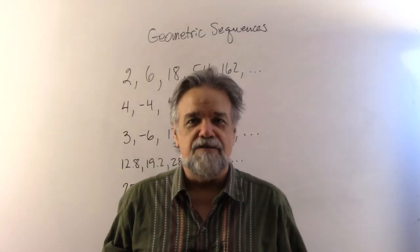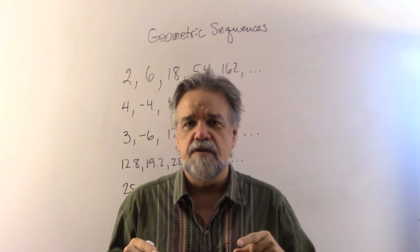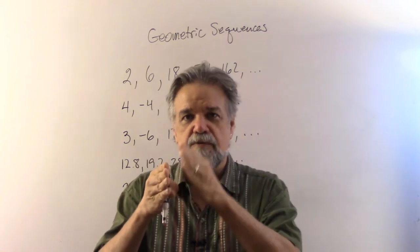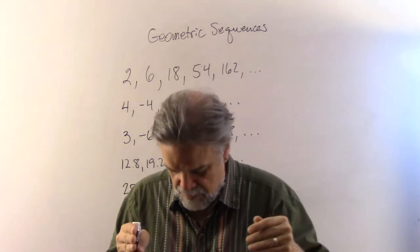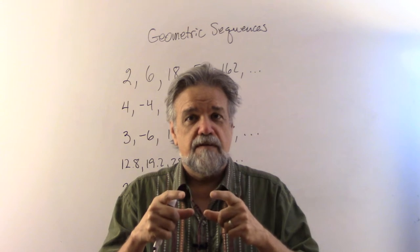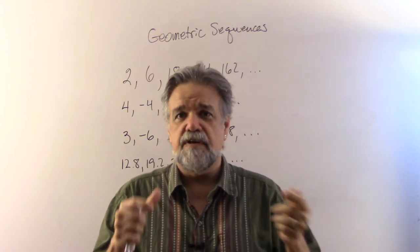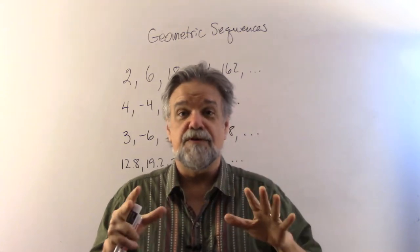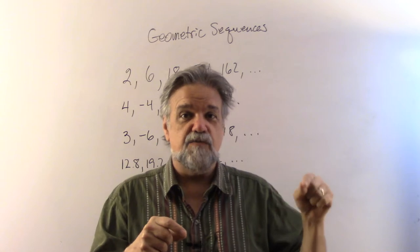Hey math students, let's talk about geometric sequences today. The last type of sequence we talked about were arithmetic sequences. An arithmetic sequence is one where you start with your first term and add the same amount to go from term to term. You can define the nth term explicitly as: a sub n equals a sub 1 plus n minus 1 times d.